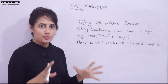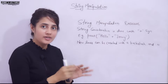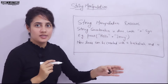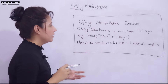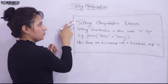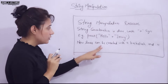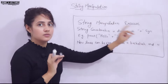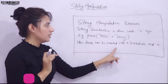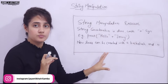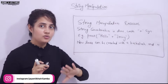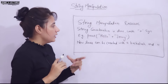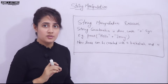I hope you understand how to concatenate strings and what an indentation error is. Here's your assignment: print the following output exactly as shown — 'string manipulation exercise', 'string concatenation is done with plus sign', 'for example print("hello" + "jenny")', and 'new lines can be created with backslash n'. You can use one or more print functions. In the next video, we'll cover the input function in Python. Bye, take care!